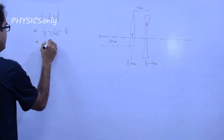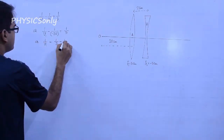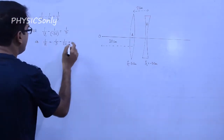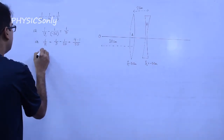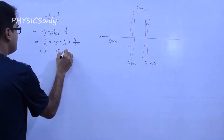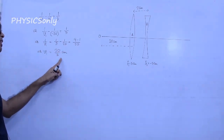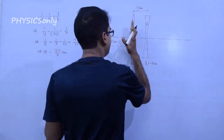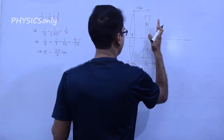So: 1/V1 equals 1/5 minus 1/20, which gives us (4 minus 1) by 20. Therefore, V1 equals 20/3 cm. Since V1 is positive, the image from the first lens forms on the other side.